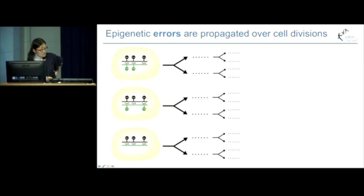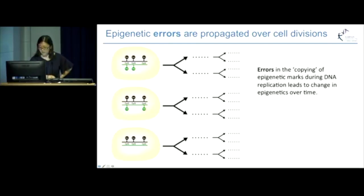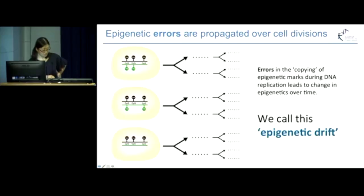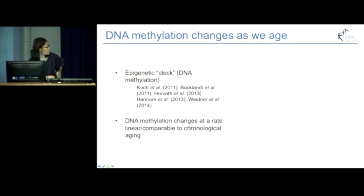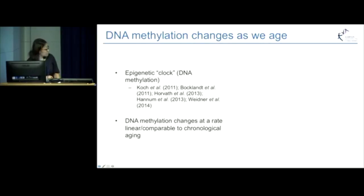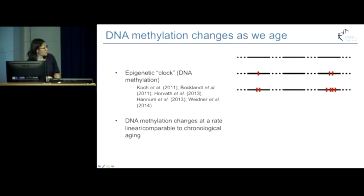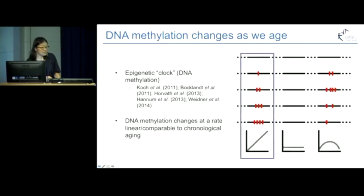New errors can arise at every division. So the errors in the copying of epigenetic marks during DNA replication or cell division lead to a change in that epigenetic mark over time — and that's something we call epigenetic drift. Researchers in the last five years or so have shown that our bodies contain what's called an epigenetic clock, based on DNA methylation.